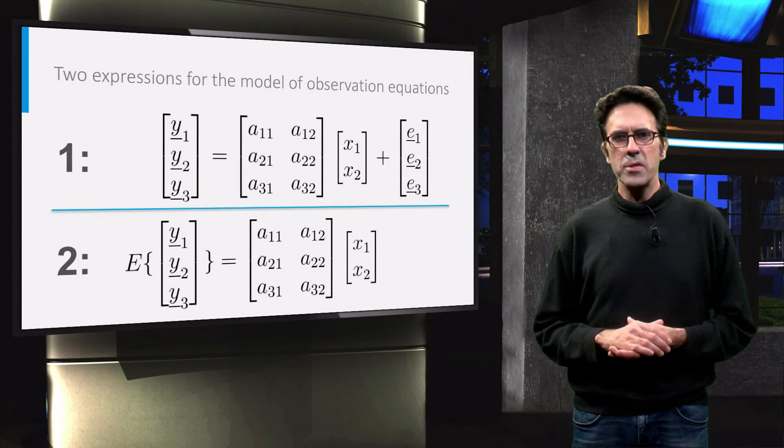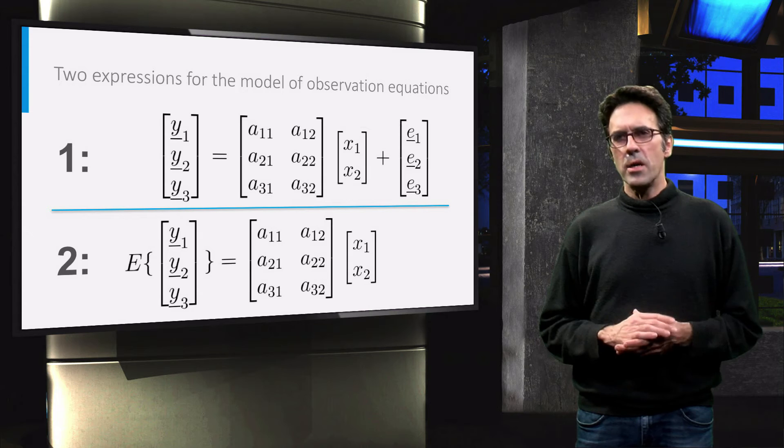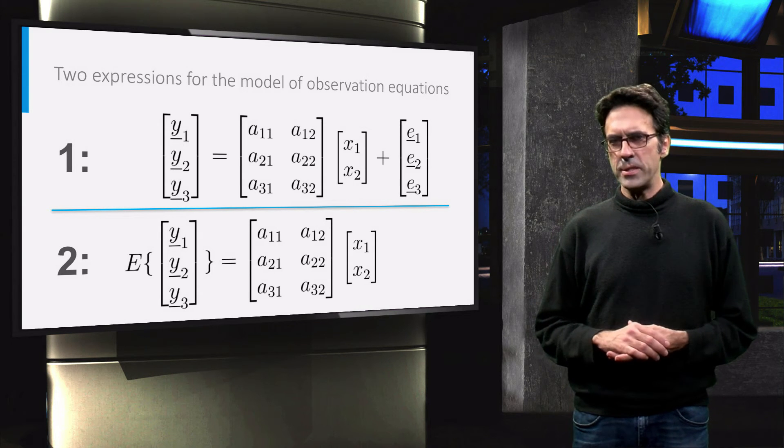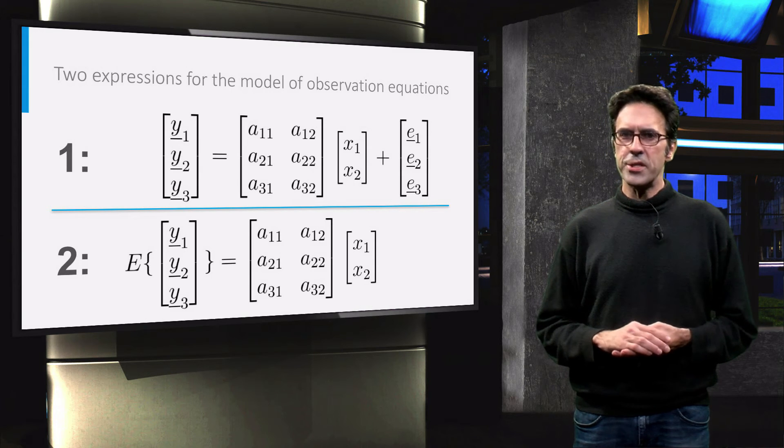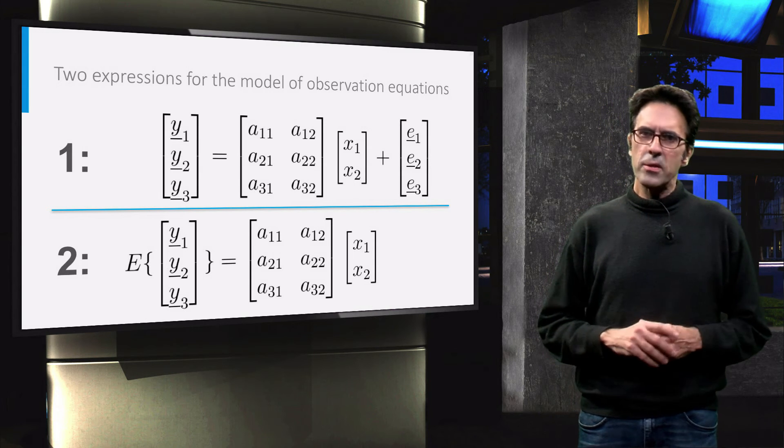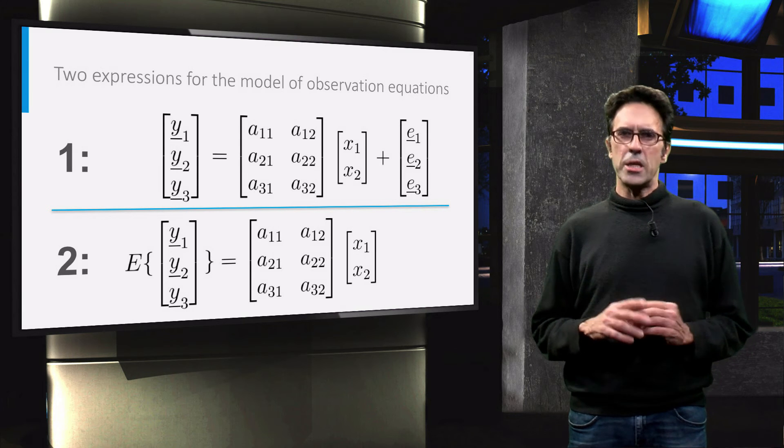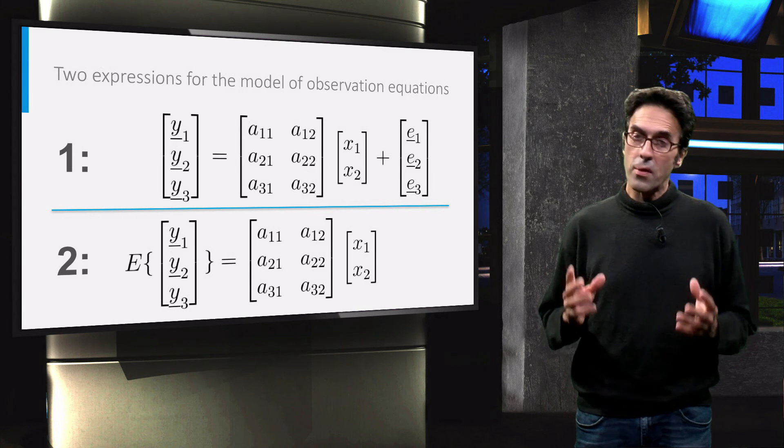So in summary, what we have demonstrated in this lecture is that there are two ways to express the functional model in the model of observation equations. The first expression denotes the error vector explicitly, and the second expression uses the expectation operator. Both are valid expressions.